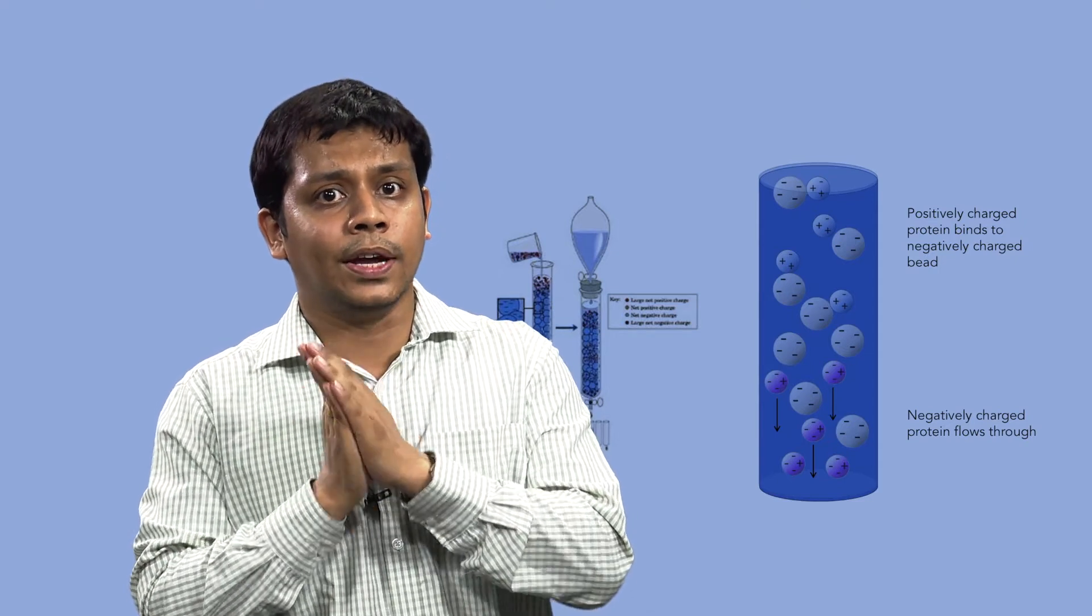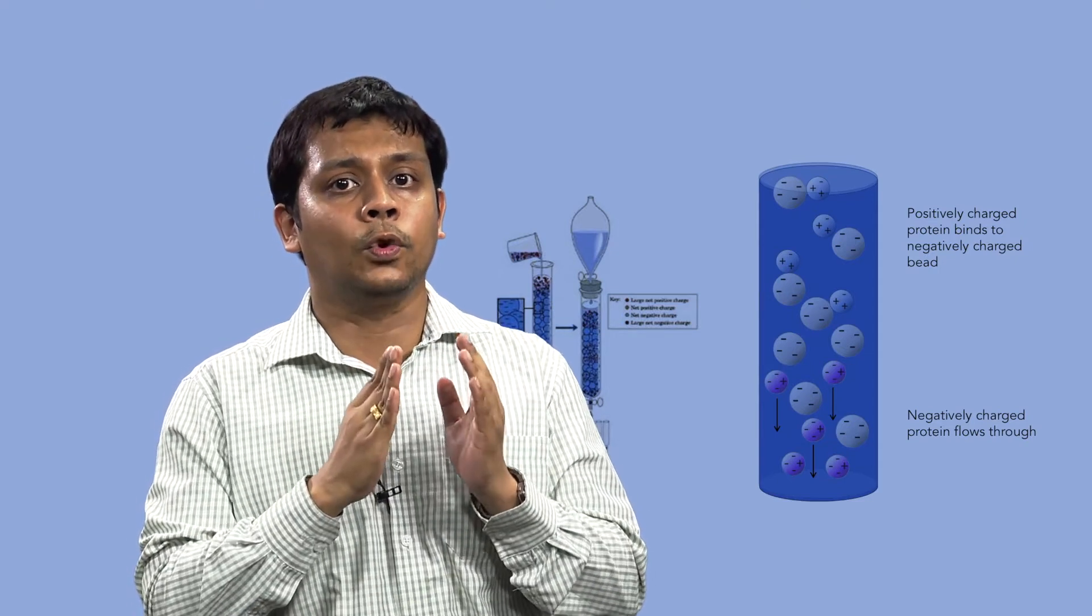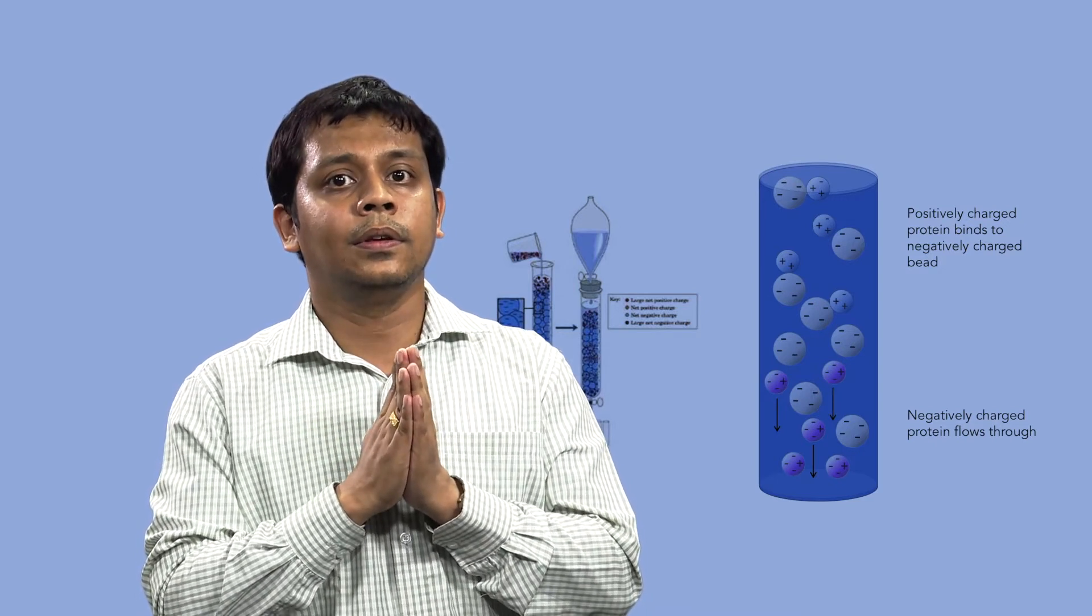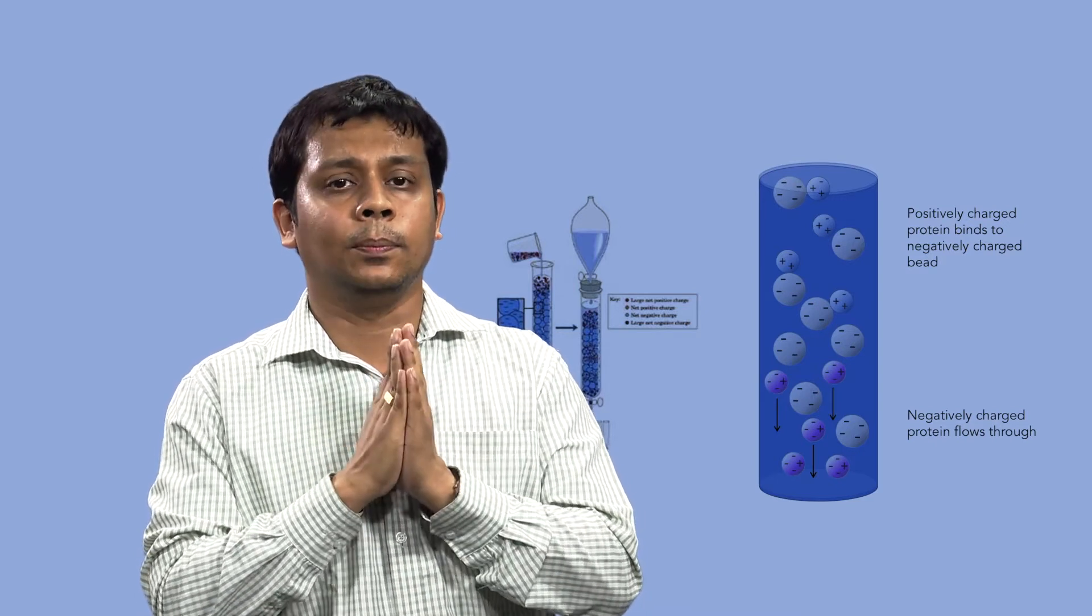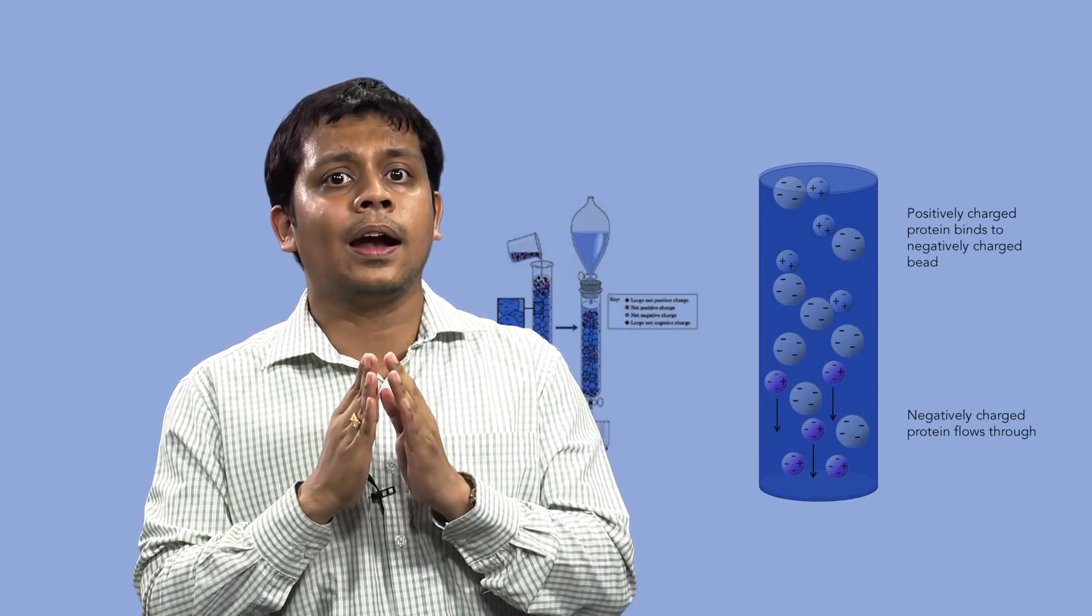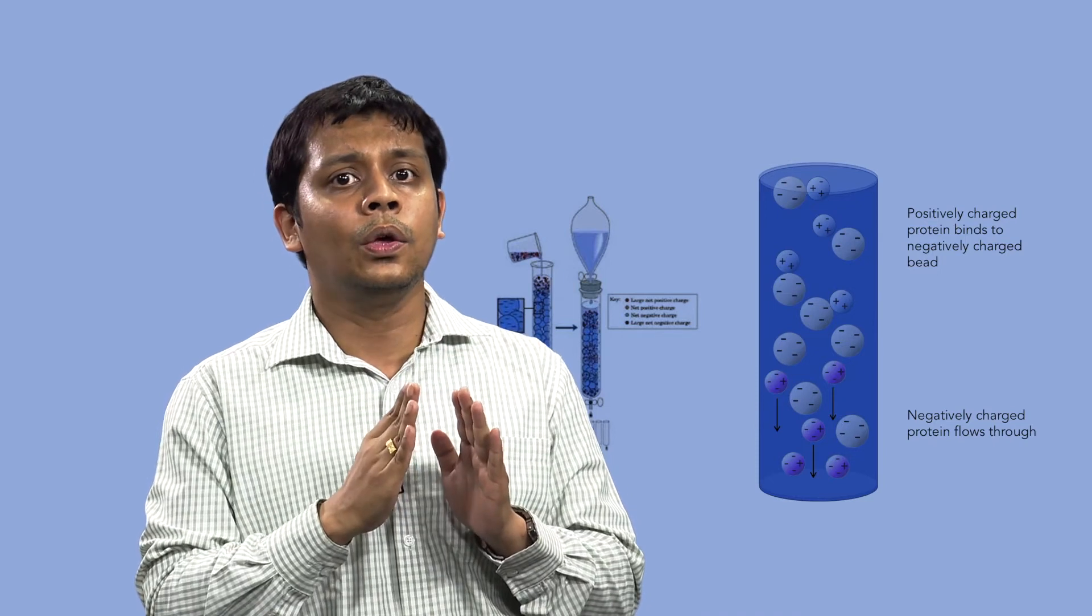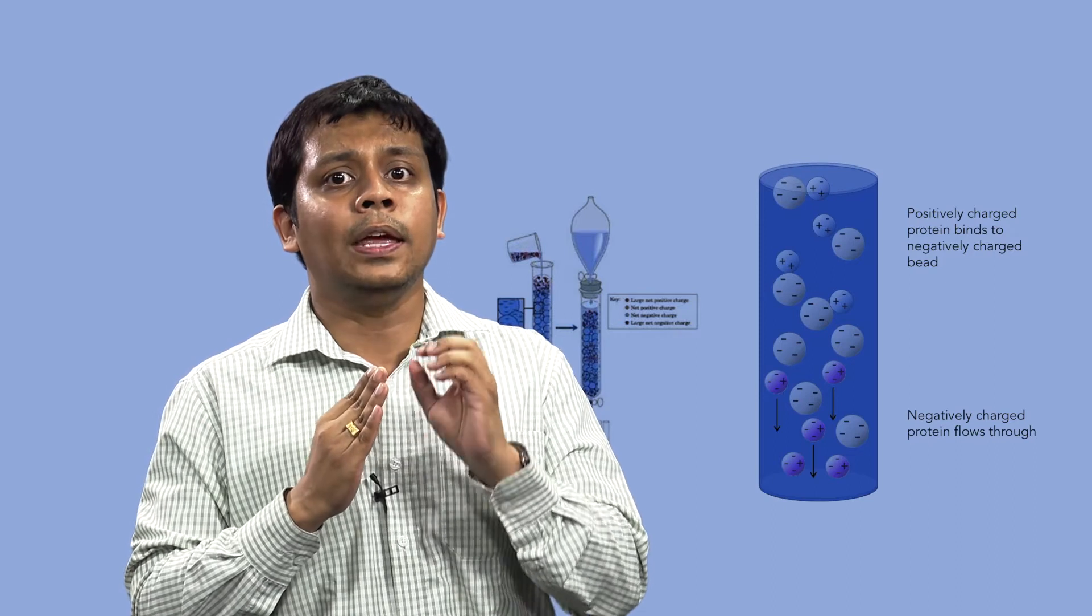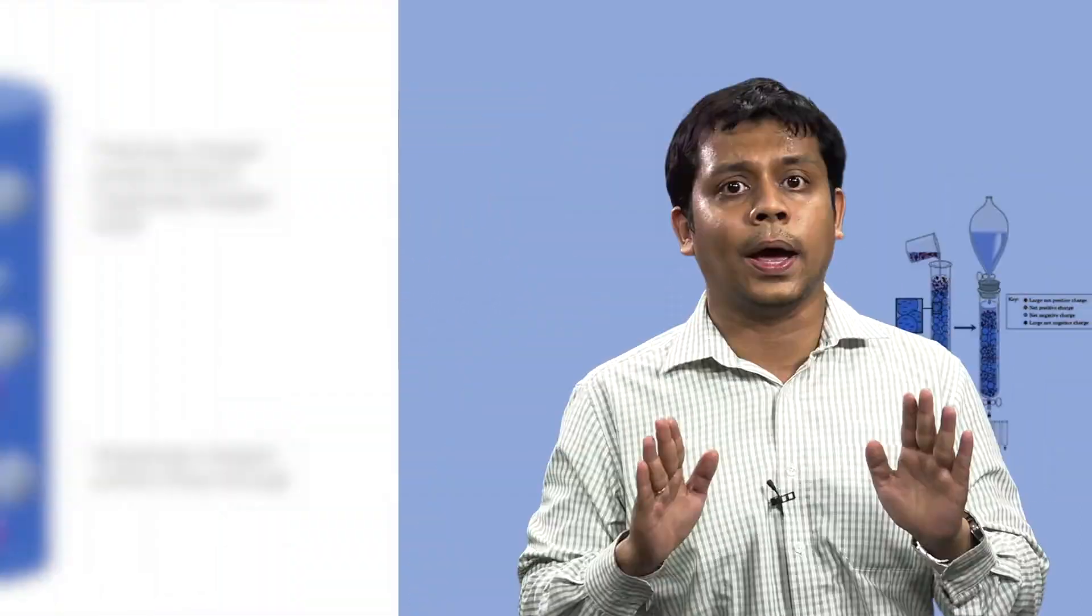When equilibrium is reached, all stationary phase charge groups are bound with exchangeable counter ions such as chloride or sodium. The pH and ionic strength of the start buffer are selected to ensure that when sample is loaded, proteins of interest bind to the medium, as many impurities as possible do not bind.